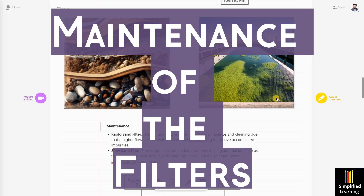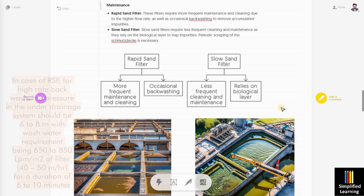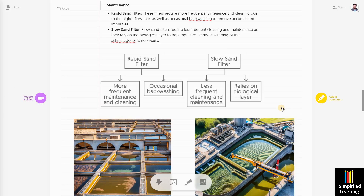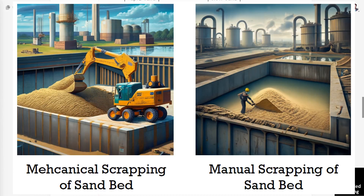In terms of maintenance, rapid sand filter requires frequent maintenance because high flow rates cause clogging of the filter bed very frequently. That's why backwashing every 24 to 48 hours is carried out, using the same filtered water. For slow sand filter, we periodically scrape the upper layers of the biofilm — the smudge deck — which forms on top of the filter bed. A total new layer is then laid over the filter bed.